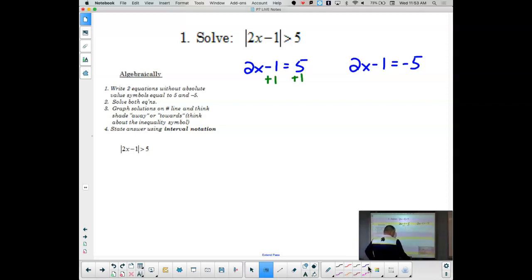So first off what I'm going to do is I'm going to say well this is 2x minus 1 equals 5. I'm going to treat it like it was an equality and then I'm going to say 2x minus 1 equals negative 5. And I'm going to solve both of those to find my two key numbers. So I'm going to add 1 to both sides. That's going to give me 2x equals 6. Divide both sides by 2 and that's going to give me x equals 3.